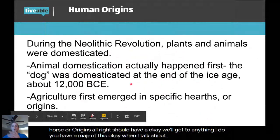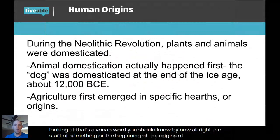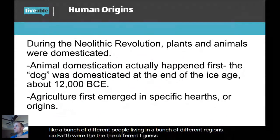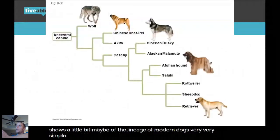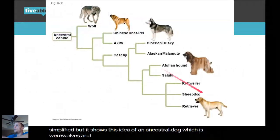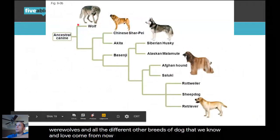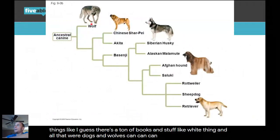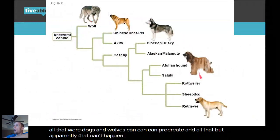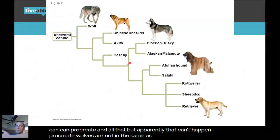Agriculture first emerged in specific hearths — origins. It wasn't invented by one person; different people in different regions of the earth independently developed it. Here's a simplified chart showing the lineage of modern dogs from an ancestral dog — the same origin that wolves and all the dog breeds we know come from, though wolves and dogs are different species and cannot interbreed.